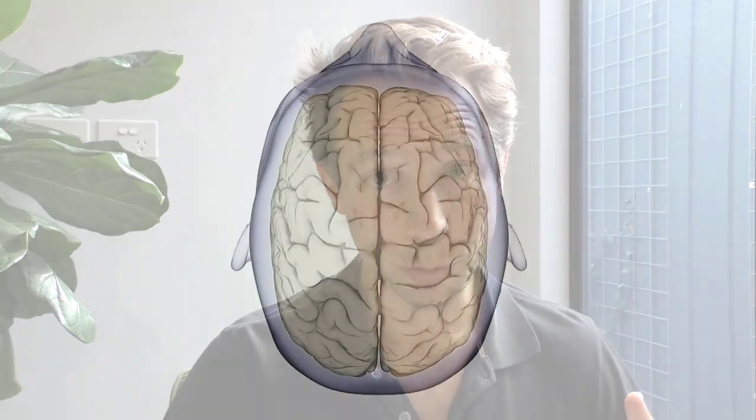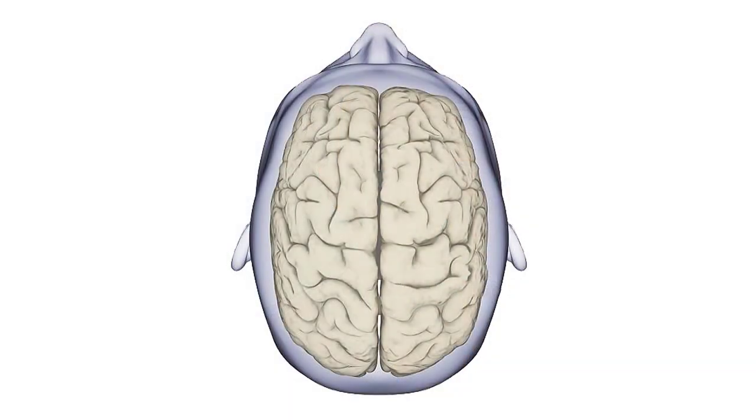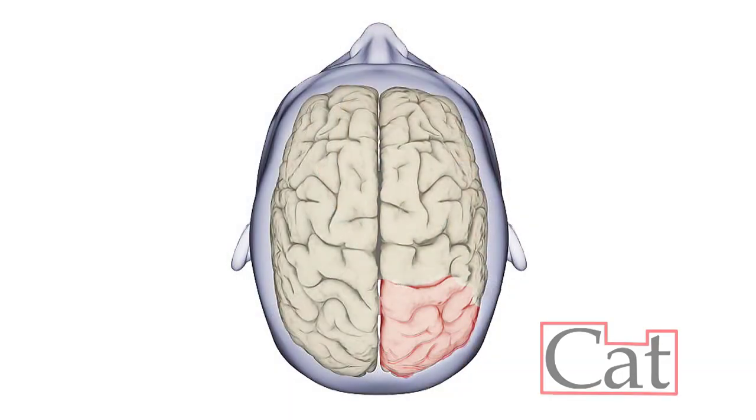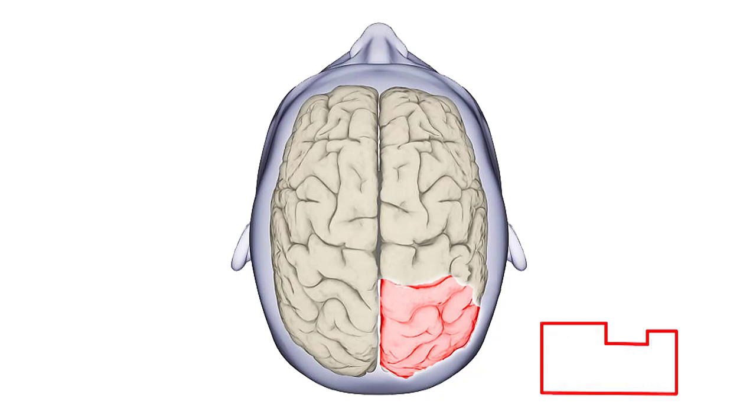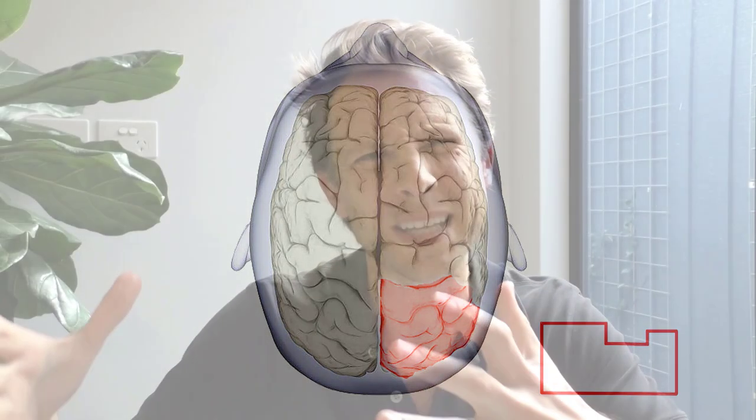Interestingly, amongst illiterate adults or many kids suffering from dyslexia, when they try to read, we see right lateralized activation. This means their brain is trying to process words holistically — trying to view them as an image — without recognizing that it has to decode meaning out of the symbols.